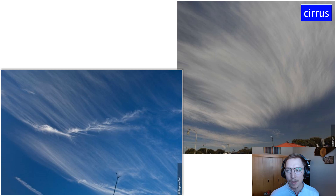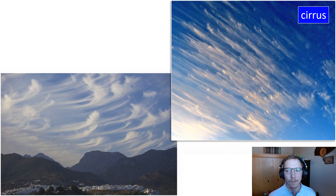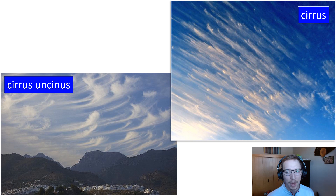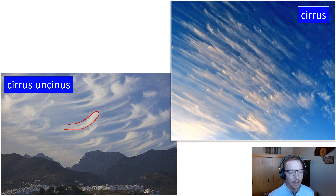Here we can see a couple of examples of those delicate icy filaments that form, almost looking like wisps or streets. And here are a couple more — our cirrus uncinus or mare's tail clouds. You can kind of see that feature: almost like a horse's tail whipping as it champs its hay.